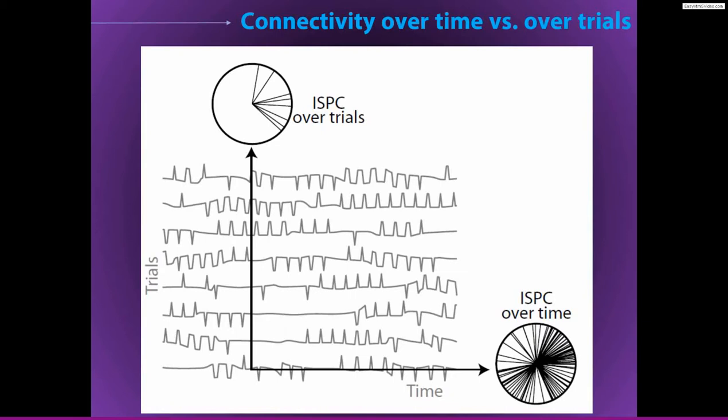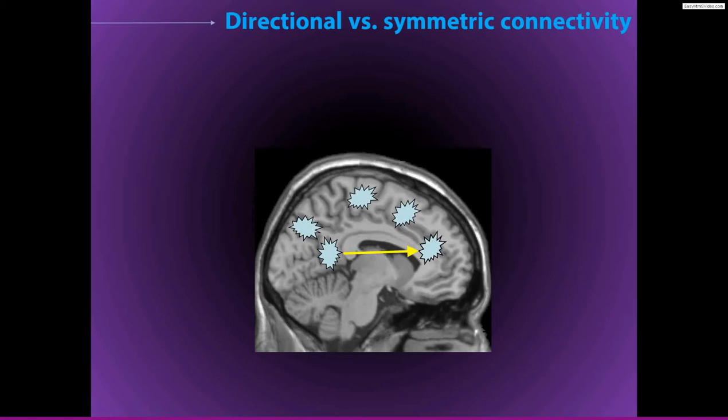The last point is the distinction between directional connectivity and non-directional connectivity — we could also call this asymmetric versus symmetric connectivity. We have a picture where we estimate the connectivity flowing from one region to another, with the arrow going in one direction — this is directional. We can also look at the opposite direction, and we can have completely different results for one analysis versus the other. This would be directional or asymmetric connectivity.